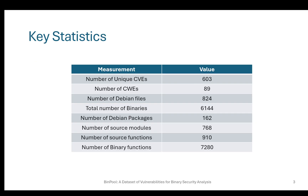In this slide, you can see the key statistics of BinPool. BinPool covers more than 600 CVEs and also 89 CWEs. In terms of diversity, BinPool covers more than 100 Debian packages. It contains more than 700 source modules that were involved in the patch. We also have more than 900 source functions that, because they were compiled for four optimization levels and for two different versions of the code — vulnerable and patched —